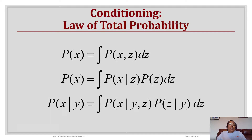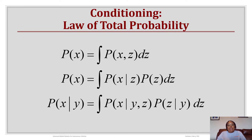Using that conditioning, the modified law of total probability in continuous time is: P(X) = integral of P(X,Z) dz, or equivalently P(X) = integral of P(X|Z)·P(Z) dz. Additionally, P(X|Y) can be written as the integral of P(X|Y,Z)·P(Z|Y) dz.